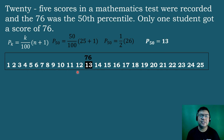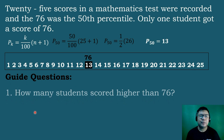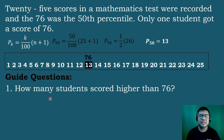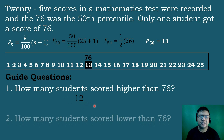As shown in the figure, counting to the 13th position confirms that the 13th number is 76, which is the 50th percentile. Guide question: how many students scored higher than 76? Counting the scores above 76, there are 12 students who scored higher than 76.